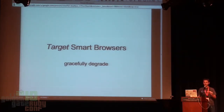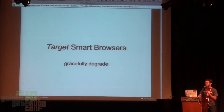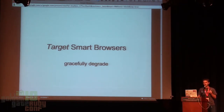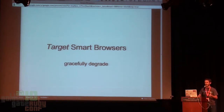The point is: target smart browsers. First, gracefully degrade. For example, you don't have to kill yourself trying to get rounded corners on IE6. It's just not worth it. They can see square corners. Everything's going to be fine. Just use border-radius, move on.